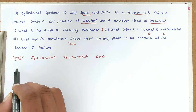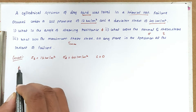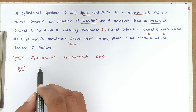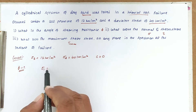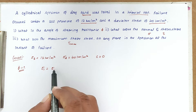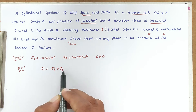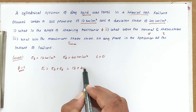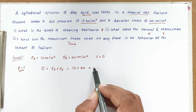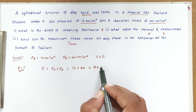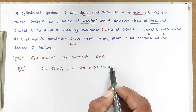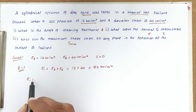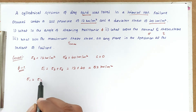First, we find the angle of shearing resistance φ. We calculate σ1 = σ3 + σD = 12 + 40 = 52 kN/m².